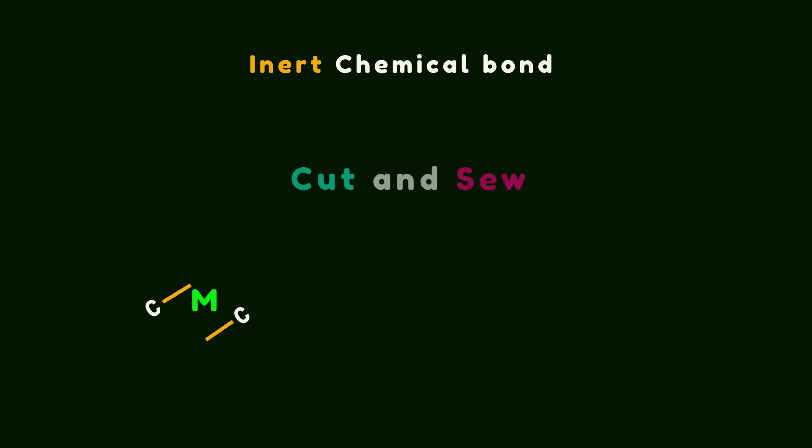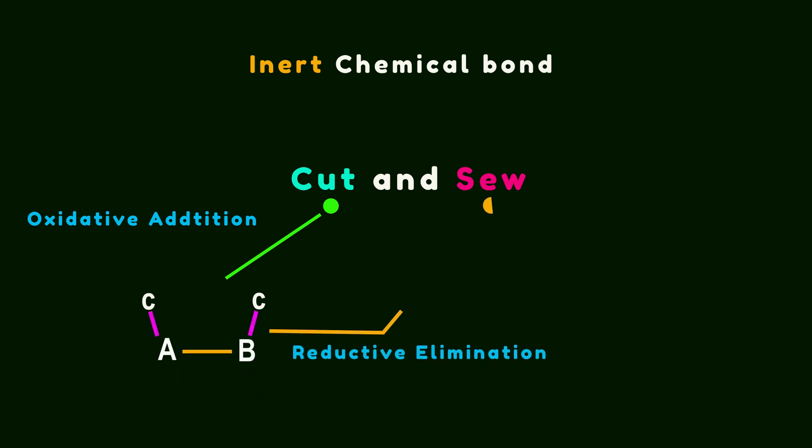Generally speaking, in the cut process, a transition metal inserts into a carbon-carbon bond by oxidative addition, followed by migratory insertion into a pi-unsaturated unit and reductive elimination, a stew process.